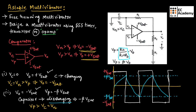This is how we get the output in an astable multivibrator, where we have two quasi-stable states that do not require any input to produce a square wave. This concludes the working of the astable multivibrator. Hope you have understood the topic. Thank you.